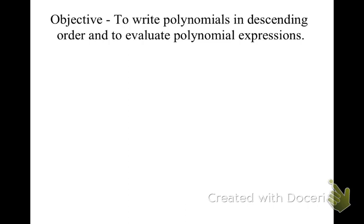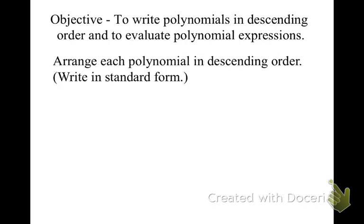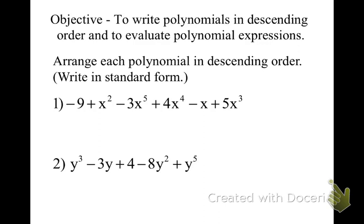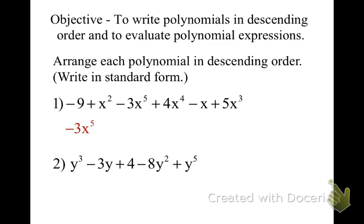The objective of today's lesson is to write polynomials in descending order and to evaluate polynomials. We've already talked about writing polynomials in descending order — that means going from the highest exponent to the lowest exponent, also called standard form. We would take negative 3x to the 5th first, then positive 4x to the 4th, then positive 5x to the 3rd, then positive x squared, and negative 9.